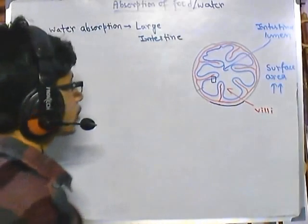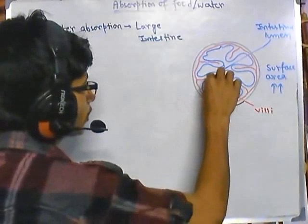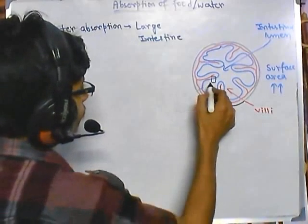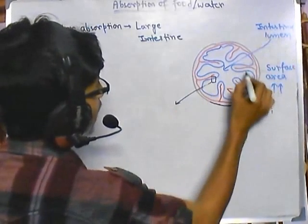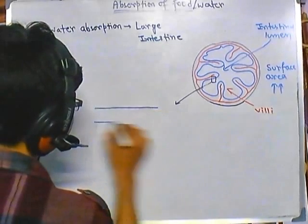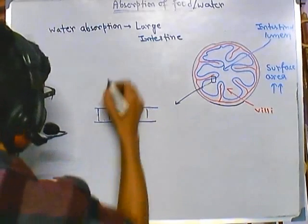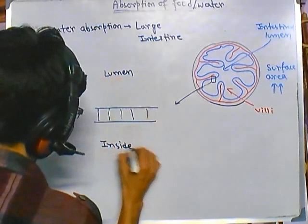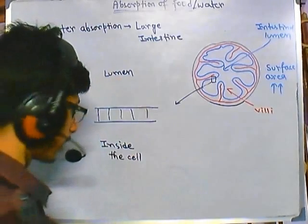To understand the water absorption process we need to zoom into a region. Here you can see this black box — if you zoom into this particular region, this is the intestinal lumen, and outside is the cell. So if you look at the cell and the intestinal lumen — this is the cell boundary of the intestinal cell, this is the lumen membrane, and this is inside the cell — this is the large intestinal cell.